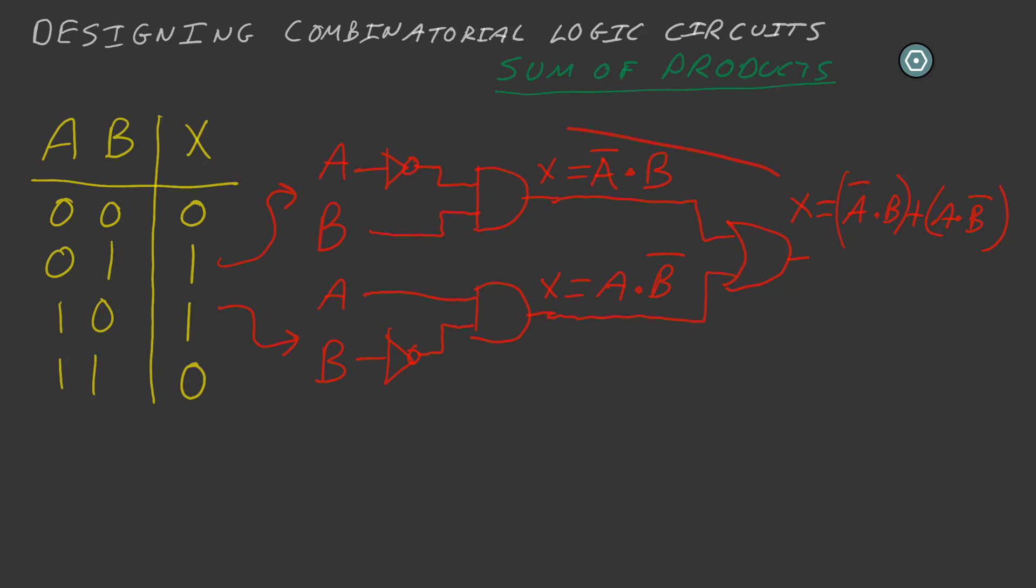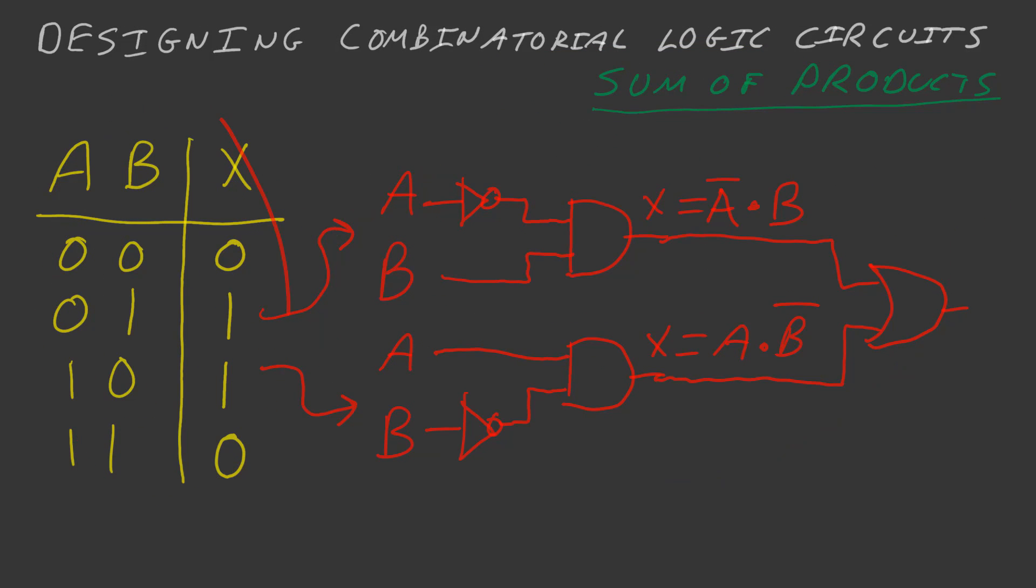Now we have the complete circuit which represents this complete truth table here in the sum of products form. Beautiful. That's it, we've designed a combinatorial logic circuit based on our desired truth table here. Because in system design, you're going to have a bunch of inputs that you have from whatever it is, and then you want to actually do some logic on that and produce a particular output. And this is how you do it. It's that simple.